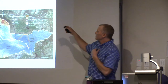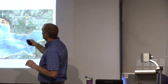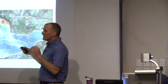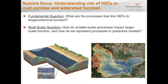Our high-level science questions are: what are the processes that link exchange flows to the biogeochemical functioning of river corridors, and from a modeling perspective, how do we take that fundamental understanding and move it into numerical mathematical models to enable prediction of function, especially in the future?